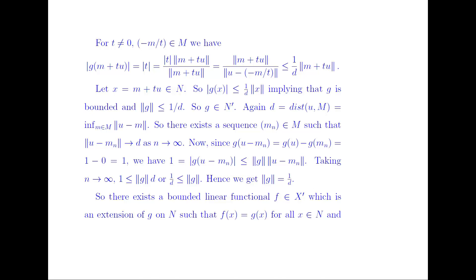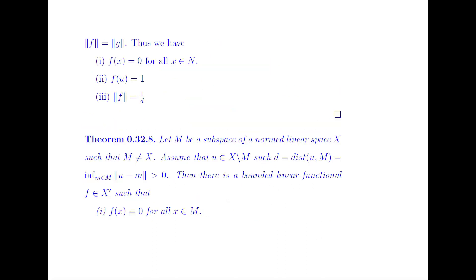So there exists a bounded linear functional F in the dual space of X which is an extension of G on N, such that F(x) = G(x) for all x ∈ N and norm(F) = norm(G). Thus F(x) = 0 for all x ∈ M, F(U) = 1, and norm(F) = 1/D. Hence we get the result.